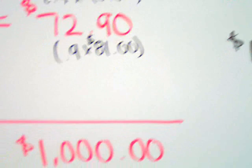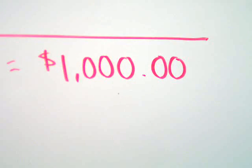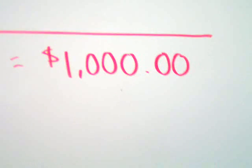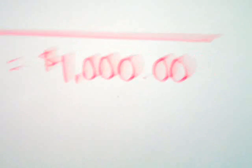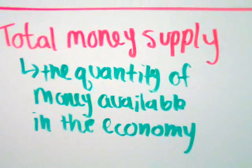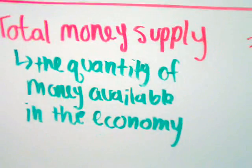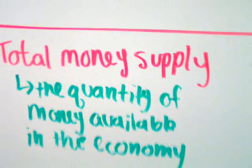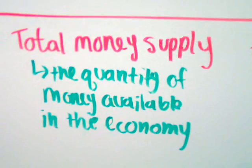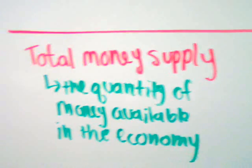In the end, when you total it all up, the amount generated in the economy is $1,000. That's the total money supply — the quantity of money available in the economy — meaning that's the total money generated out of that original $100 that was deposited in the first place.